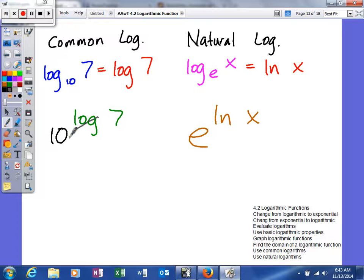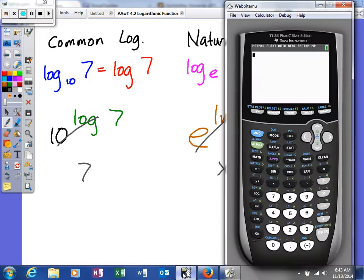So in these two examples, this will cancel and leave me 7, this will cancel right here and leave me x. You can find these. These are the two logarithms that you can definitely type in your calculator. So log of 7, and it will just type it in. Natural log of 8, and you can do it.